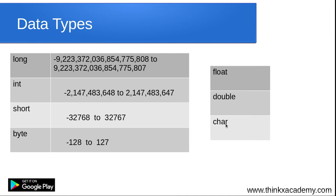In the Eclipse IDE, we will assign data types to different variables like float and double, and we will perform some operations on the data using operators which we will discuss. There is also the Boolean data type, which holds values like true and false. If a variable is holding either true or false, we can assign its data type as Boolean.